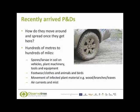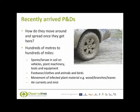So how do recently arrived pests and diseases get to us? How do they move around and spread once they get here? Well they can be spread between hundreds of metres or hundreds of miles. Spores or larvae can come in on soil, on vehicles or plant machinery, tools or even equipment. They can also come in on footwear or clothes and even animals and birds. The movement of infected plant materials such as wood, branches and leaves as well as whole plants can be important.